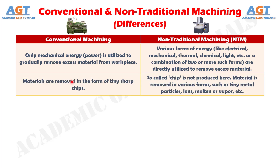Difference No. 2: In conventional machining, materials are removed in the form of tiny sharp chips, whereas in non-traditional machining, so-called chip is not produced. Material is removed in various forms such as tiny metal particles, ions, molten or vapor, etc.